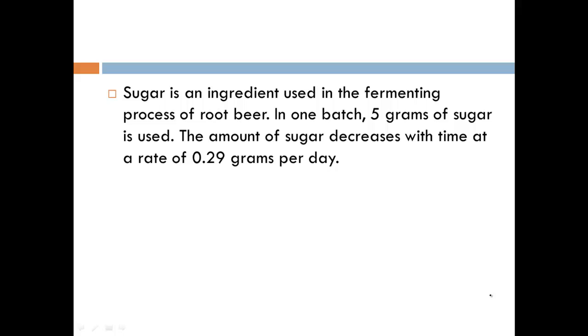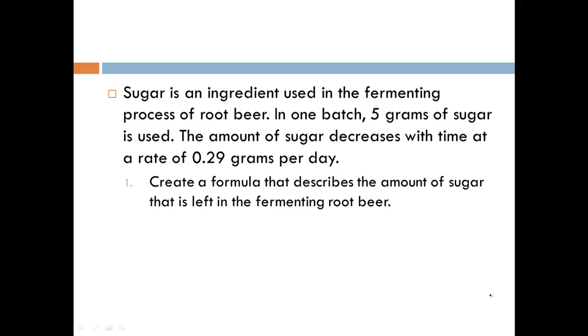Sugar is an ingredient used in the fermenting process of root beer. In one batch, 5 grams of sugar is used, and the amount of sugar decreases with time at a rate of 0.29 grams per day. So the first thing we need to do is write a formula that describes the amount of sugar that is left in the fermenting root beer.